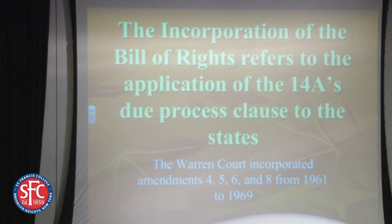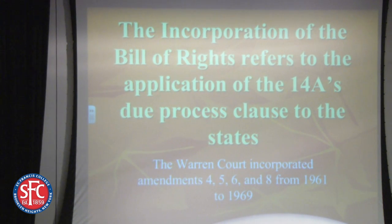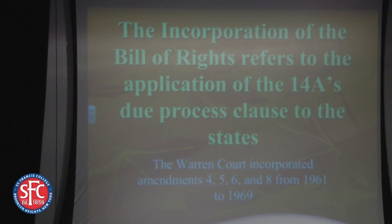Let's define some terms — this is going to get fairly complicated — and then I want to move on to the incorporation of the Bill of Rights. The United States Constitution is a beautiful document, but it's rather short. It doesn't say very much, and what it says is fairly ambiguous. The United States starts in 1789, and between then and 1791, there's a drafting of the first ten amendments — the Bill of Rights. The Warren Court incorporated amendments four, five, six, and eight between 1961 and 1969, a fairly compressed period showing that Warren was both energetic and powerful.